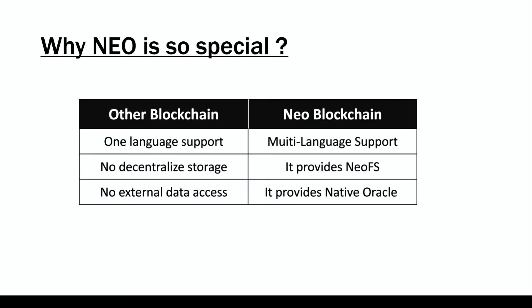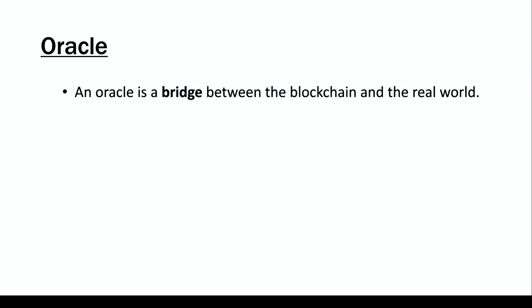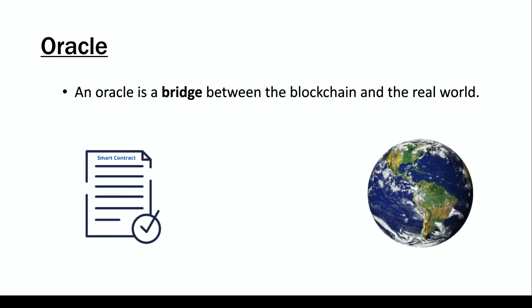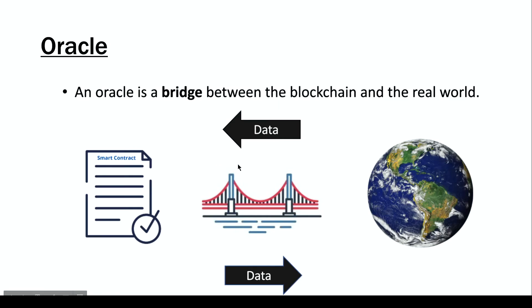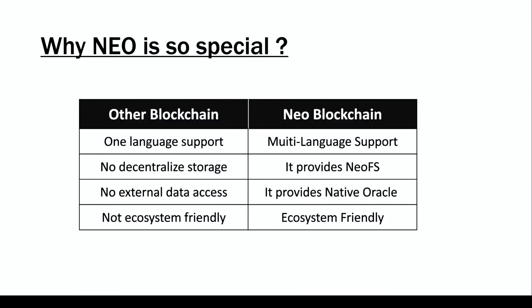The third difference is that other blockchains do not provide external data access, while NEO blockchain has native Oracle. For example, if you want a smart contract that fetches cryptocurrency prices — which is data external to the blockchain — other blockchains require third-party support. NEO's native Oracle acts as a bridge between the blockchain and the real world, letting you bring in external data or send data from a smart contract to the real world.